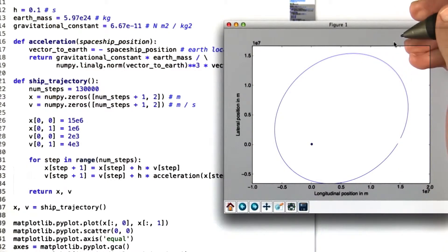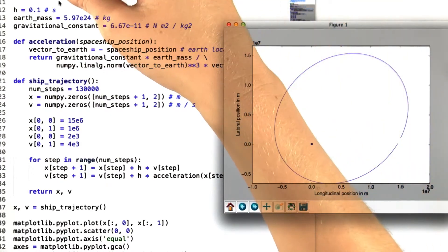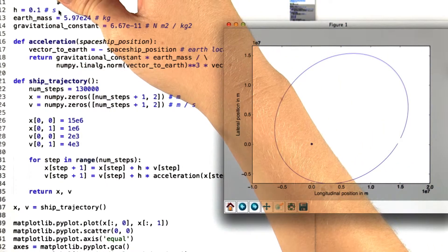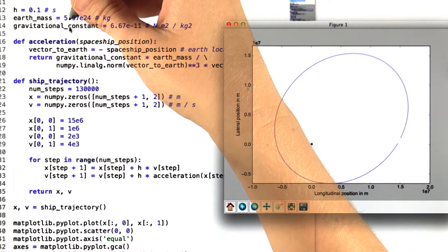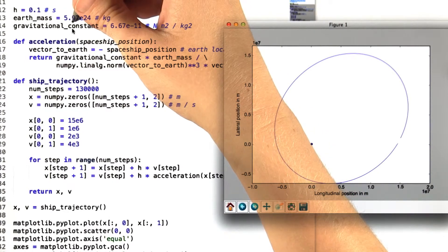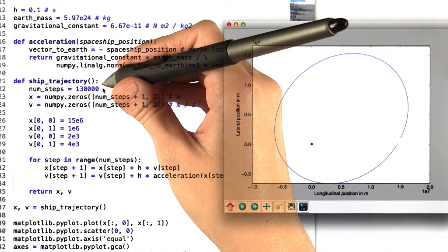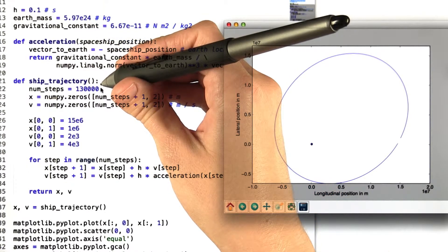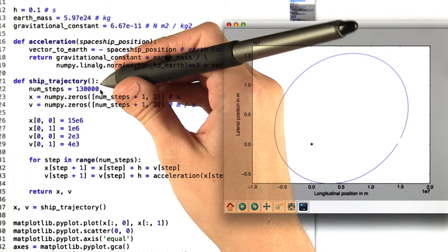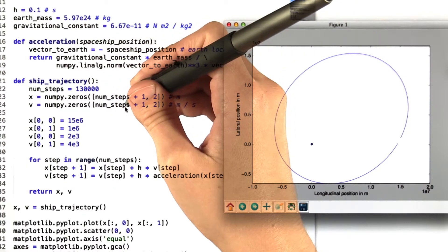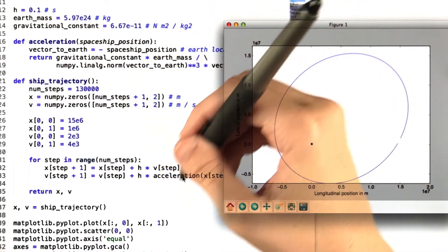And now just to play with this example a little bit more, we've gone in and first changed the step size so that it's one tenth of the size that it used to be. This should give us a much more exact approximation since we're taking steps more closely together. However, we've also had to change the number of steps from the original 13,000 up to 130,000 so that we still have the same number of seconds total that the spaceship is in orbit, which is a result of this changed code.